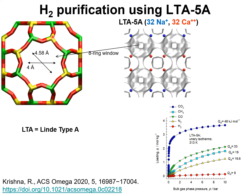Another choice of adsorbent for use in the PSA process for hydrogen purification is LTA5A zeolite. LTA stands for Linde-type A, and the 5A zeolite is a cation exchange zeolite containing 32 sodium cations and 32 calcium cations per unit cell. The location of the cations in the framework are shown by blue spheres for sodium and red spheres for calcium. The structure of LTA consists of cages about 11 Ångström in diameter separated by 8-ring windows of dimensions 4.6 × 4.6 Ångström, which are devoid of extra-framework cations.